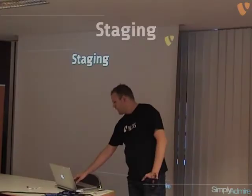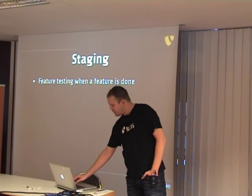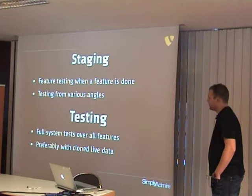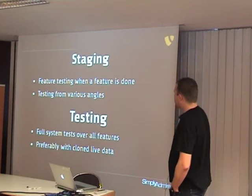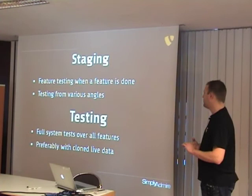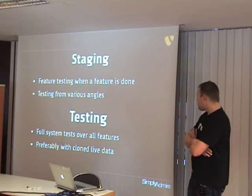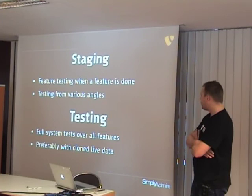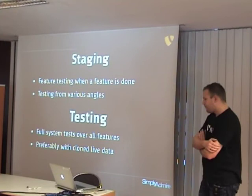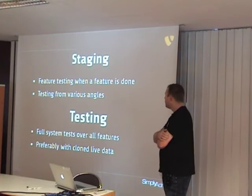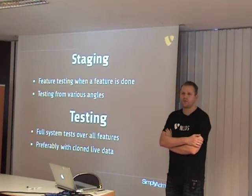Then we have the staging stage. I took staging and testing together because that's how it normally works in Flow. When a feature is done, the feature should be tested as is — just only the feature. That would basically be unit testing, and you should test from various angles. The testing stage is a full system test over all features, and it's preferred to test on cloned live data. If we send in a change in a Flow project, you would normally run all the tests over your full project, so everything is tested constantly.